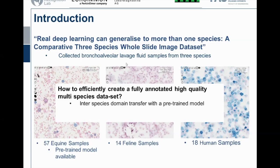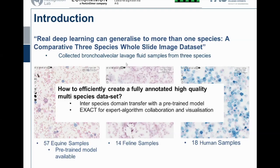Our approach is quite simple. We want to try an interspecies domain transfer, meaning we have our trained model for horses and want to see whether it also works for cats and humans without any adaptations or with minimal adaptations. Second, to create a high-quality dataset, human experts have to check it, so we use EXACT, our online annotation tool with specialization for expert-algorithm collaboration. We also have nice visualization techniques, and combining these we want to create a really big dataset — the biggest in this field currently consists of 17 whole slide images, and we are aiming for around 100.